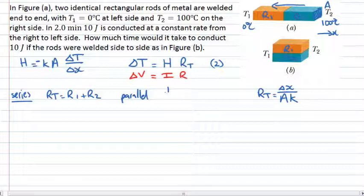In parallel, the reciprocal of the total resistance is given by the sum of the reciprocals, so 1 over R1 plus 1 over R2. In this particular case here, heat flows both through R1 and it flows through R2 in parallel.